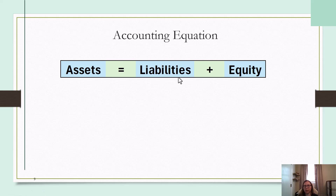If you owe $200,000 on it, that would be your liability, and then your equity would be the difference. Now that's not exactly how it works in accounting because assets are recorded at cost, not what they're valued at. It was just to give you an idea of what this might look like.